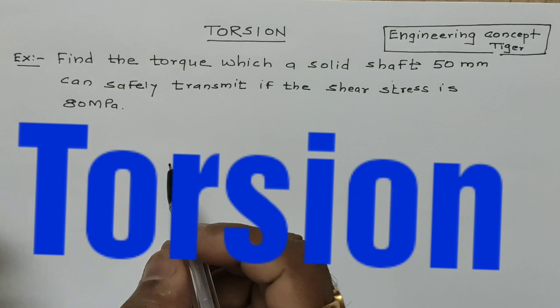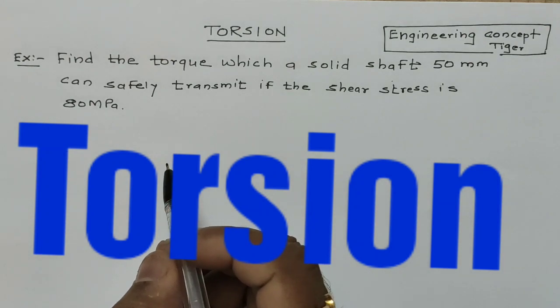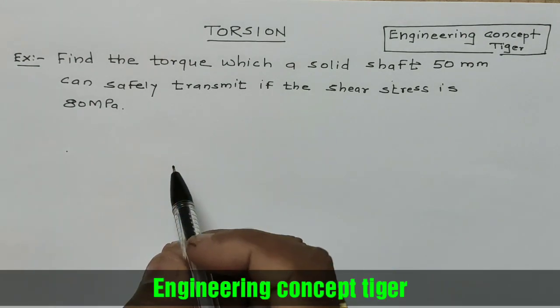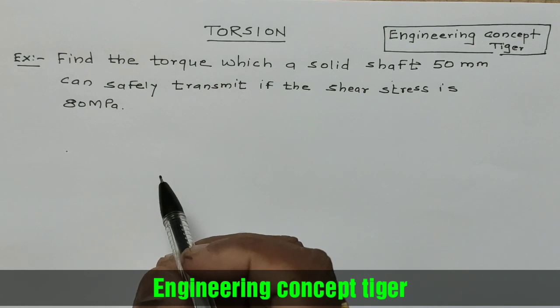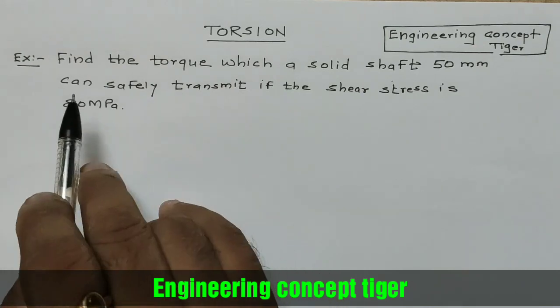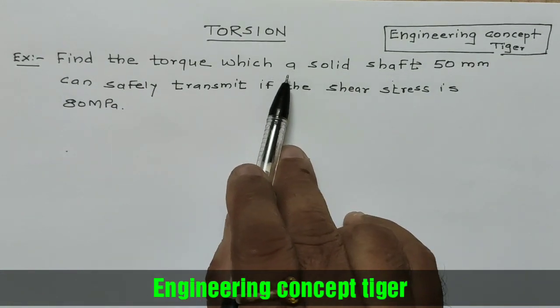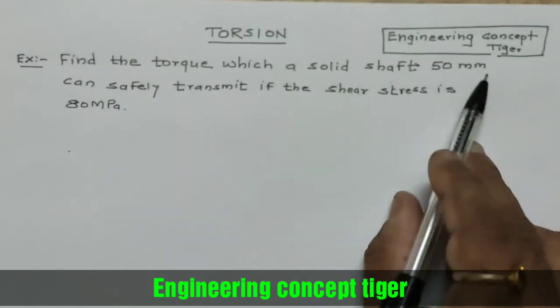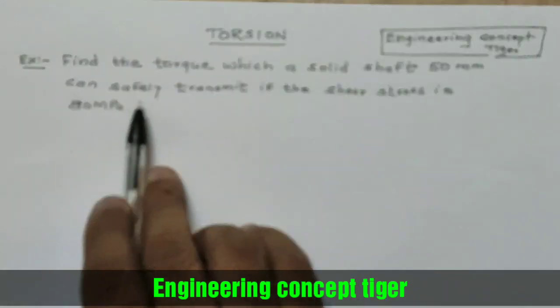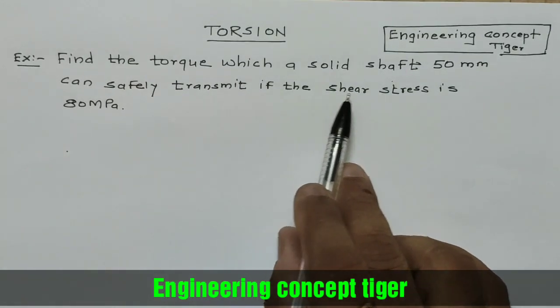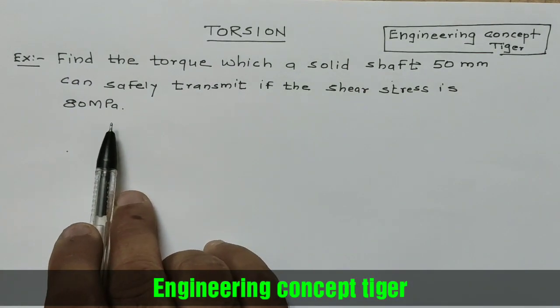Hello friends, today we will solve numericals on torsion. Here's an example: find the torque which a solid shaft 50 mm can safely transmit if the shear stress is 80 MPa.